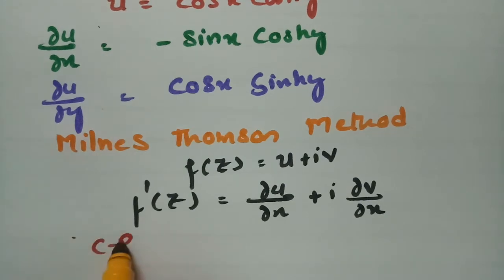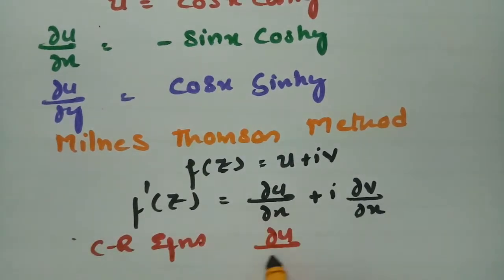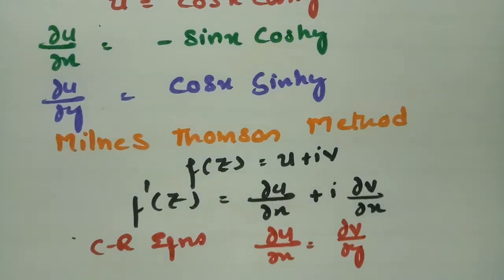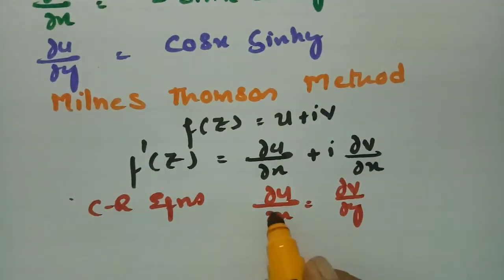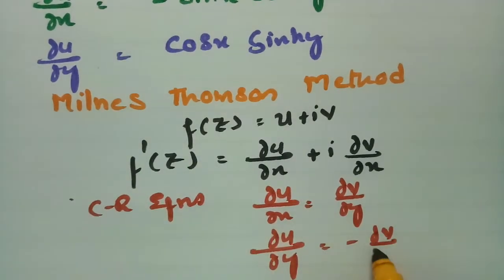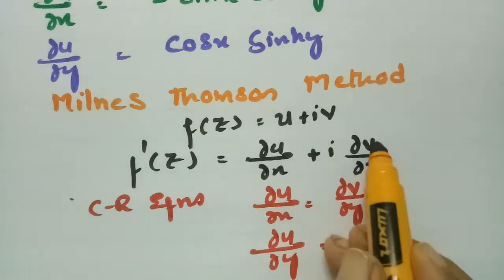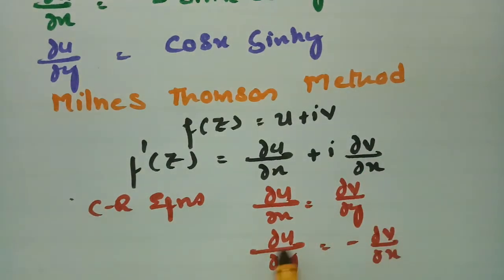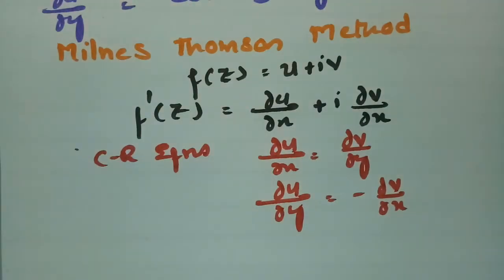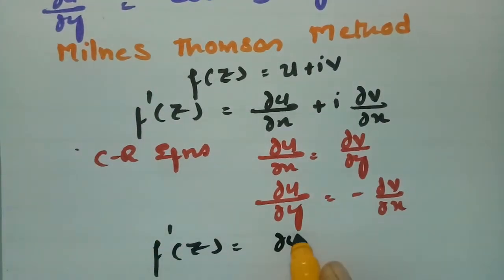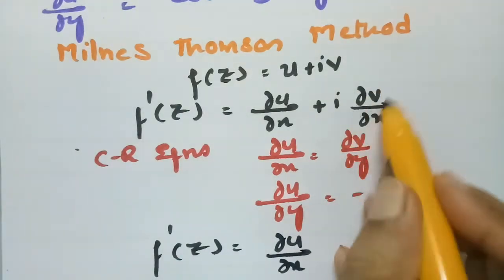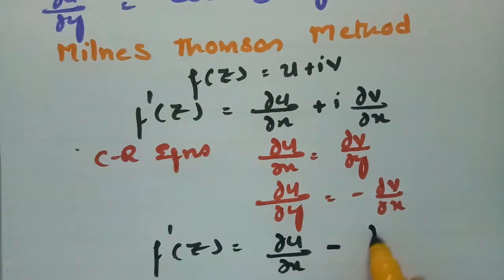Using the CR equations: ∂u/∂x = ∂v/∂y and ∂u/∂y = -∂v/∂x. So in place of ∂v/∂x I can write -∂u/∂y. Transforming the expression, f'(z) = ∂u/∂x + i·(-∂u/∂y), which is ∂u/∂x - i·∂u/∂y.